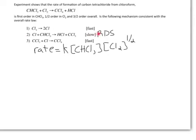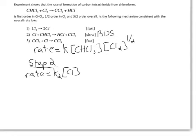Step two is our rate-determining step, so we're going to write down the rate law for that step. For step two, the rate law is: rate is equal to K2 times the concentration of Cl to the first power, because the coefficient in the equation is one, times the concentration of CHCl3. Obviously, the rate law for the second step does not match the experimentally determined rate law, but chlorine is an intermediate because it appears both in the products and in the reactants, and it doesn't appear in the overall chemical equation.